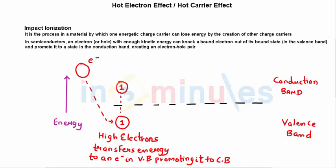Impact ionization is a process in a material by which one energetic charge carrier can lose energy by the creation of other charge carriers. We'll quickly understand this. What we need to understand is that impact ionization is some sort of process in which one energetic charge carrier can lose energy.